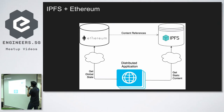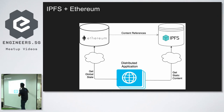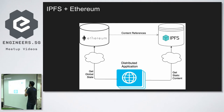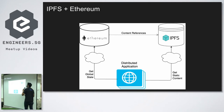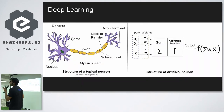So this is how it works: Ethereum references content — big data that's stored on IPFS. The distributed application gets that static content from IPFS and gets the global state from Ethereum. It's a global state machine. So if we combine IPFS and Ethereum, we can build distributed, decentralized applications. But what is really a talk without talking about deep learning?